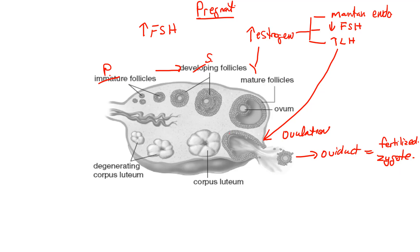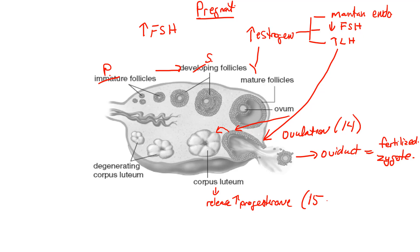These secondary follicles develop into the corpus luteum with high levels of LH as well. The corpus luteum releases high levels of progesterone. This typically occurs around days after ovulation — ovulation is day 14 — so the corpus develops around days 15 to 28. You'll see questions like that on a test, with graphs showing when progesterone is high or when estrogen is high, so you do have to remember these days.